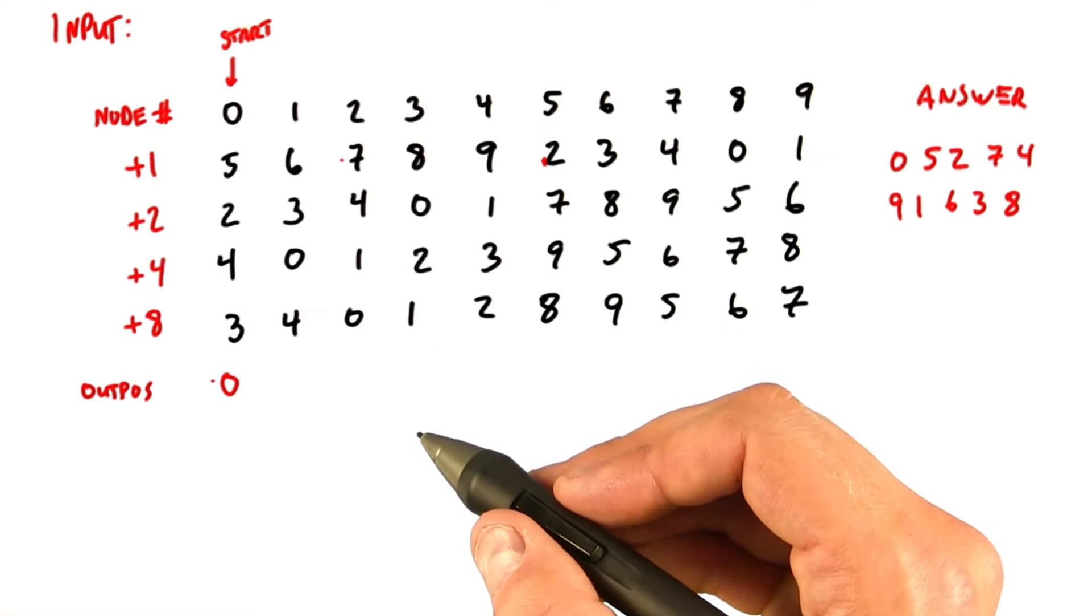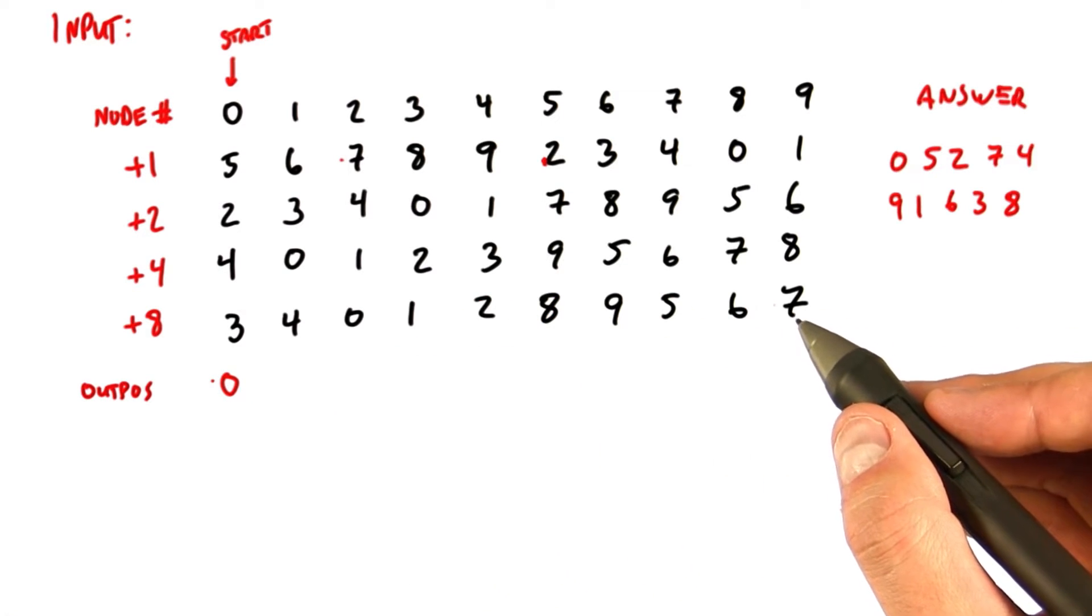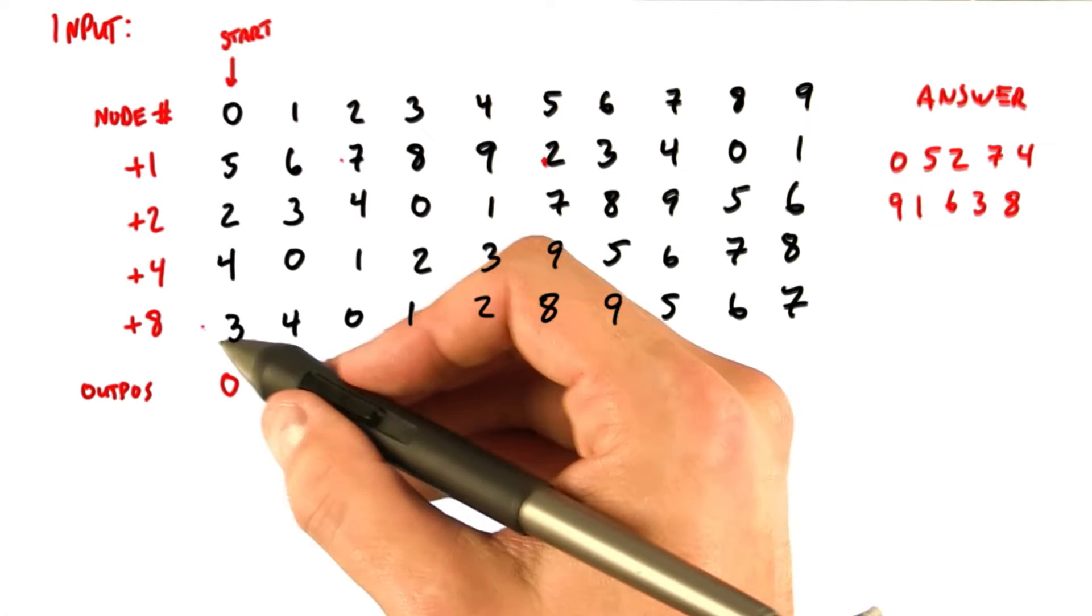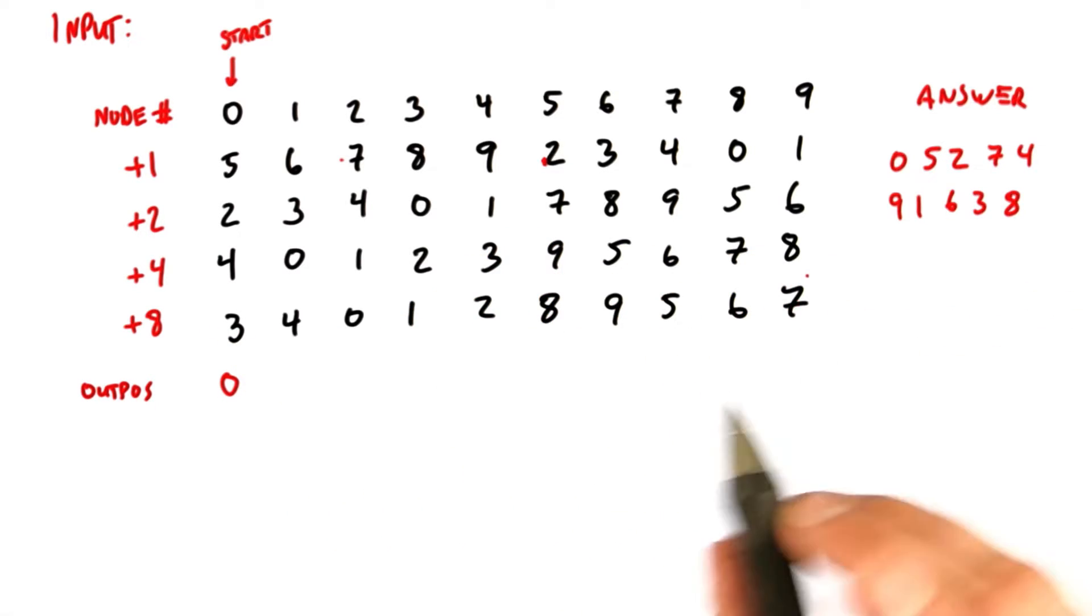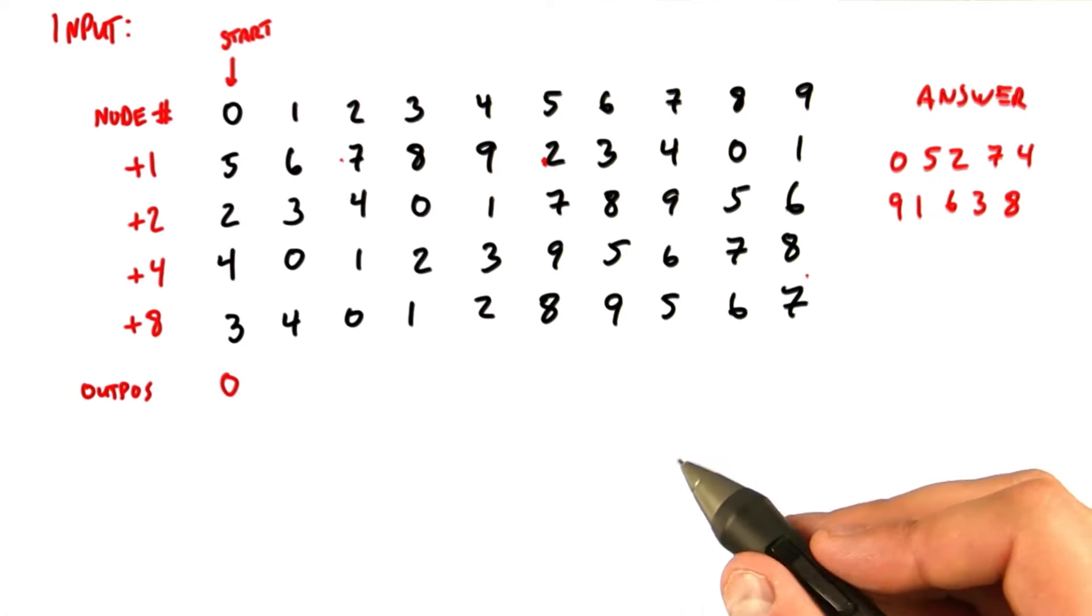So now we're going to do several iterations of an algorithm that will eventually wake up all the nodes and calculate their output positions. On each iteration, we're going to launch n threads, one per element here. But if a thread is asleep, we immediately return from that thread. Only awake threads do any work at all.